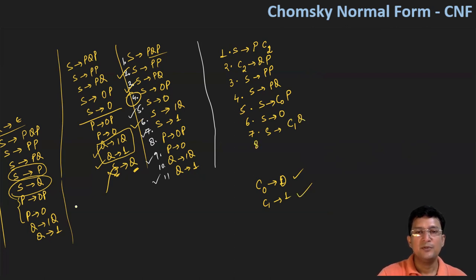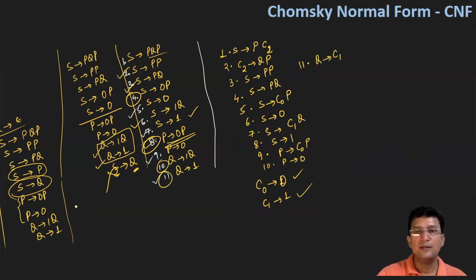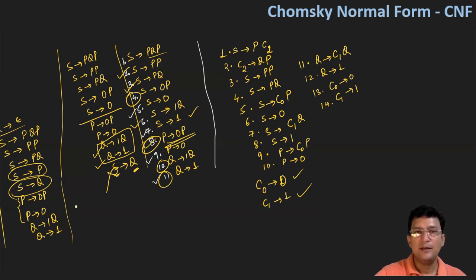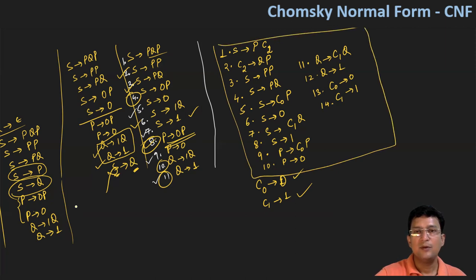We have C1 produces one. The production S produces one is already in Chomsky Normal Form. For P produces zero P, we write P produces C0 P, and P produces zero stays. For Q produces one Q, we write Q produces C1 Q, and Q produces one is already in CNF. Along with this, we add the two productions we assumed: C0 produces zero, and C1 produces one. This complete set of productions is now in Chomsky Normal Form.